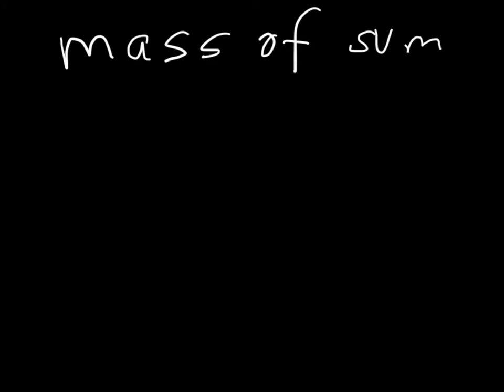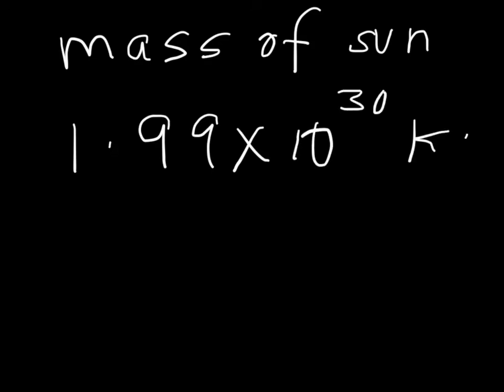I'm not going to write it out in regular notation, but I will say the mass of the sun is 1.99 times 10 to the 30, positive 30 kilograms. Just a thing to make note of, is positive 30 is implied by no sign at all.